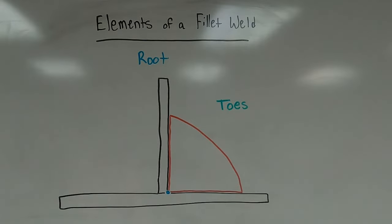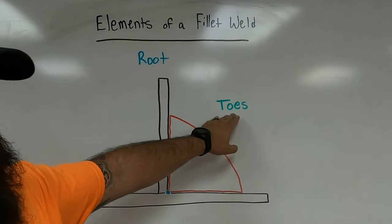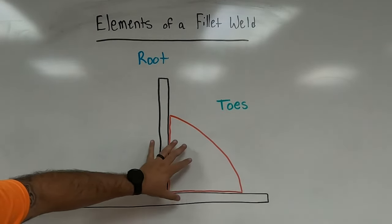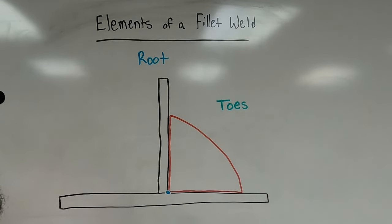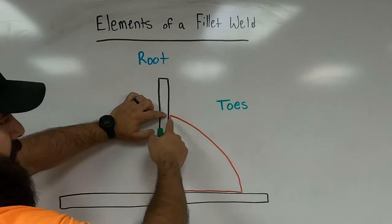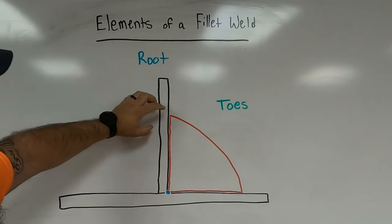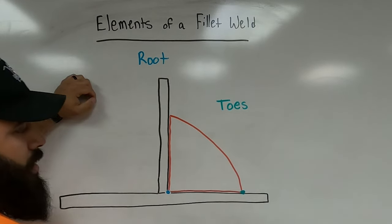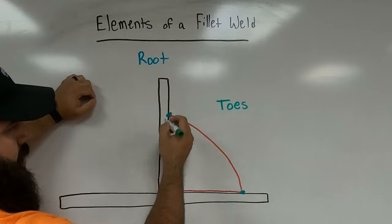The next element is the toes of the fillet weld. Every weld has two toes — think of them as the edges of the weld, or the area where the weld transitions into the base metal. With this illustration, the toes are at the two corners or edges of the weld where they meet the base metal, not including the root. So you have one toe on one side and the other toe on the other side.